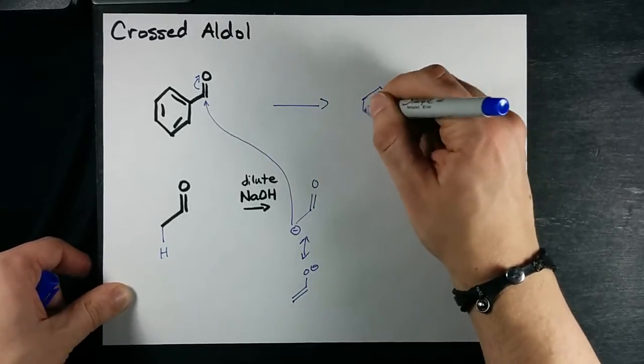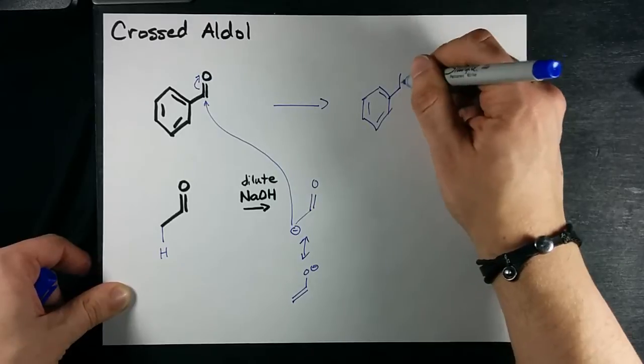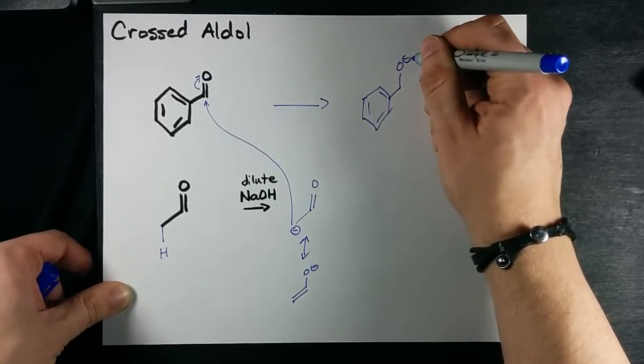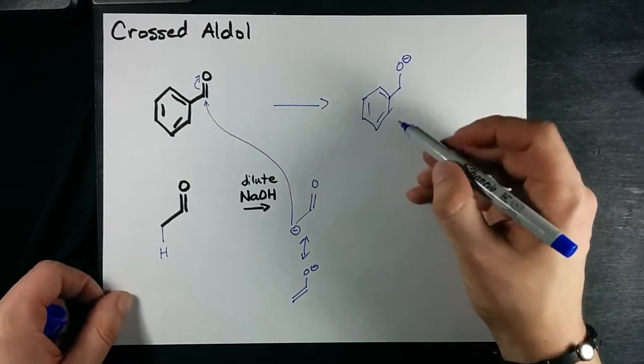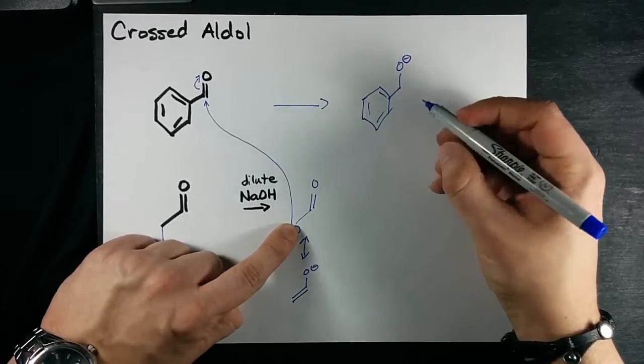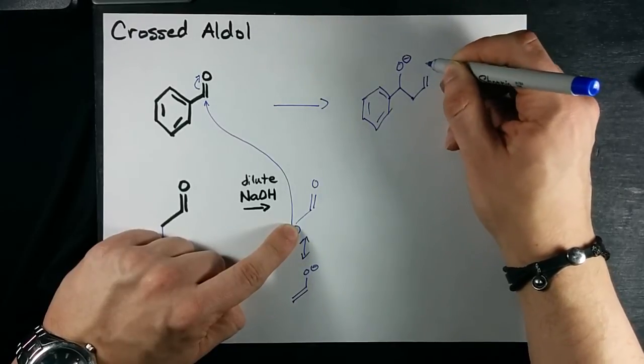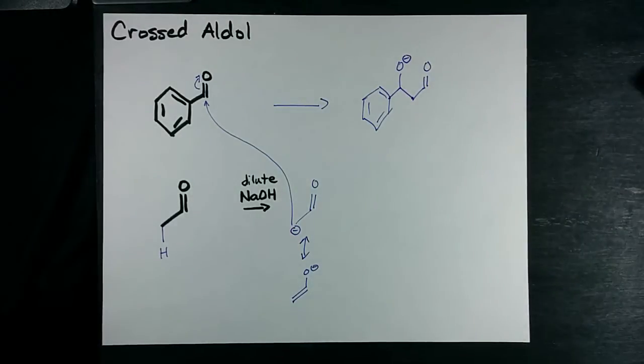We end up with this benzene here untouched. We have this oxygen which now has a minus charge on him, and that carbon is attached to this carbon here. That's that bond, and he always had this double bonded oxygen carbon attached to him.